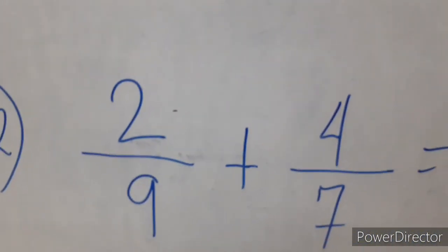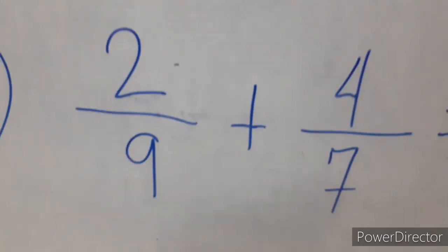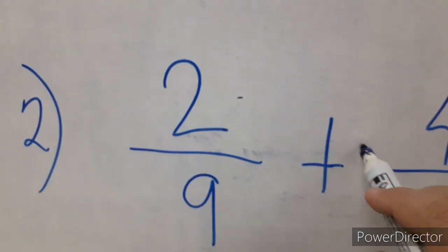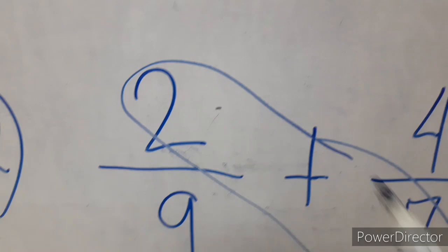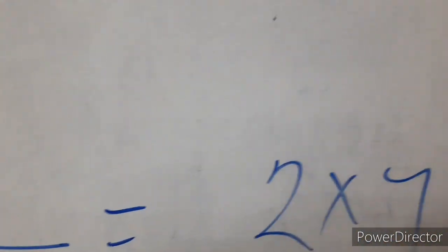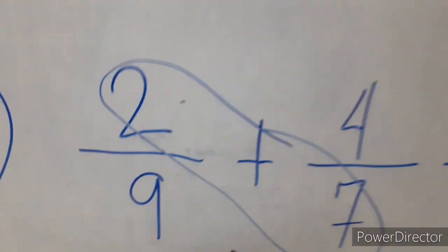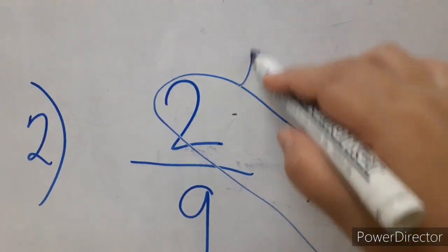So first, we have to cross-multiply again. 2 times 7. So, 2 times 7 is 14. So we are going to put here 14.